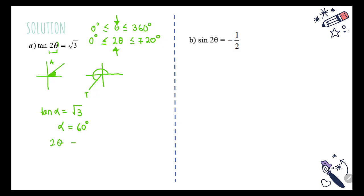Now, since tan(2θ) = √3 and we know √3 corresponds to 60°, we write 2θ equals the angles in our quadrants. Starting with the first quadrant: 2θ = 60°. Then for the third quadrant: 2θ = 180° + 60° = 240°.